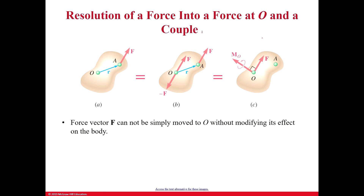If you have an origin — x, y, and z — and a force somewhere in space, that system of a force pulling something in space can be conceptualized as a force and a moment at the origin. This is basically the moment produced by the force and the distance, applied at the origin, along with the same force moved to the origin.